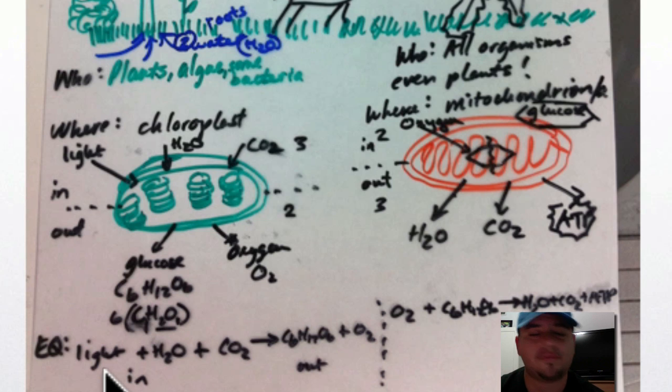And so if you put that in the equation, remember everything on the left is what's going in. Everything on the right is what's going out. So what's going in here? Well, you're getting light, water, and carbon dioxide. Those are the three. And you turn it into glucose. And also you get oxygen.